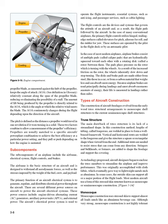The primary function of an aircraft electrical system is to generate, regulate, and distribute electrical power throughout the aircraft. There are several different power sources on aircraft to power the aircraft electrical systems. These power sources include engine-driven alternating current, AC generators, auxiliary power units, APUs, and external power. The aircraft's electrical power system is used to operate the flight instruments, essential systems such as anti-icing, and passenger services such as cabin lighting.